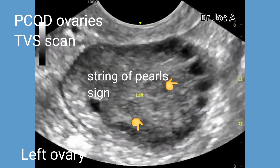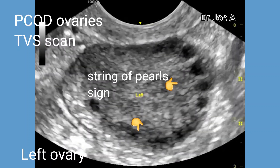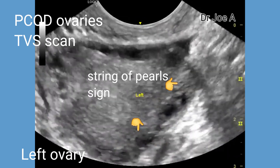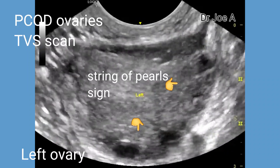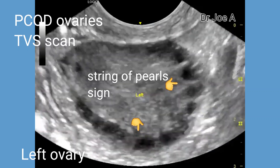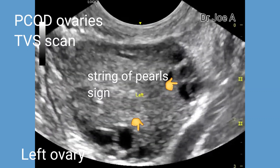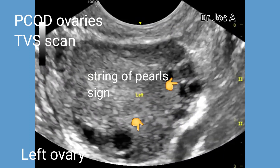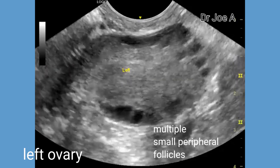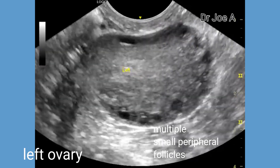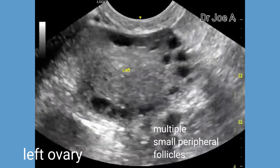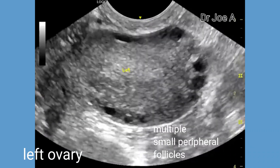This is a case of advanced polycystic ovarian disease or PCOD on transvaginal ultrasound scan. The left ovary is grossly enlarged with a string of pearls sign due to small follicles arranged along the rim of the ovary. The volume of the left ovary is more than 17 cc. Also note that the ovarian stroma shows increased echogenicity or is hyperechoic.